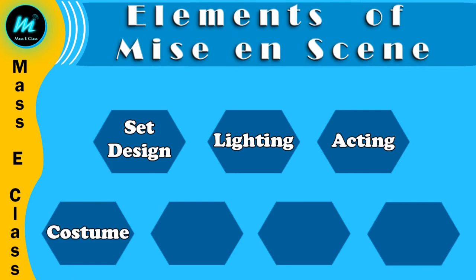The next element is costume. Costume helps to portray the subject properly, and the actor looks perfect in the character which he or she is playing. If an actor is playing the role of an inspector, then a proper inspector costume is needed. If there is a courtroom drama film, then the lawyer costume is needed. We need proper costume so that we can portray the subject of a film.